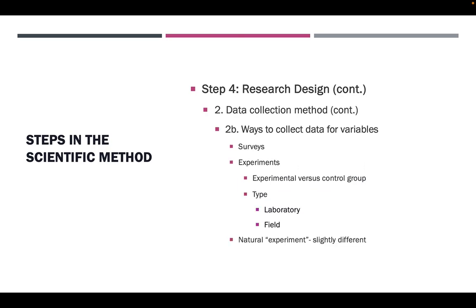Surveys are not the only way to gather data. Increasingly popular in political science are experiments, where we can randomly assign people to a control group, which does not receive a stimulus or treatment, or an experimental group, which does receive a stimulus or treatment. We can then test whether or not the treatment, or independent variable, has a true impact on the behavior of the experimental group — the behavior being the dependent variable. Because of our random assignment, we can rule out other factors that could affect the treatment's impact on group behavior.